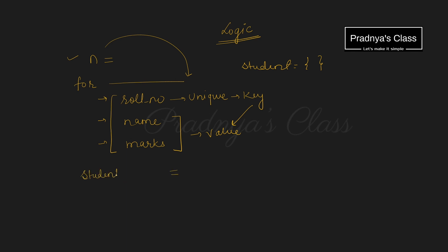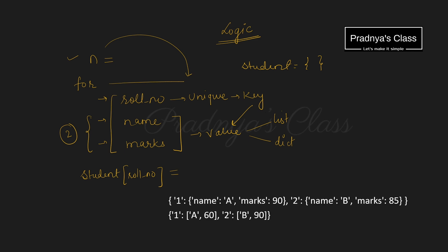We can add data to the dictionary using an assignment statement. The dictionary name is student, and role number will be its key. There are two data items which will act as a value. For that we have two options: we can create a list, or we can create a dictionary for the values. If we take some random values for the student, in the first option we are creating a dictionary for the values — the key is the role number and the value is again a dictionary. In the second option, the value is a list.